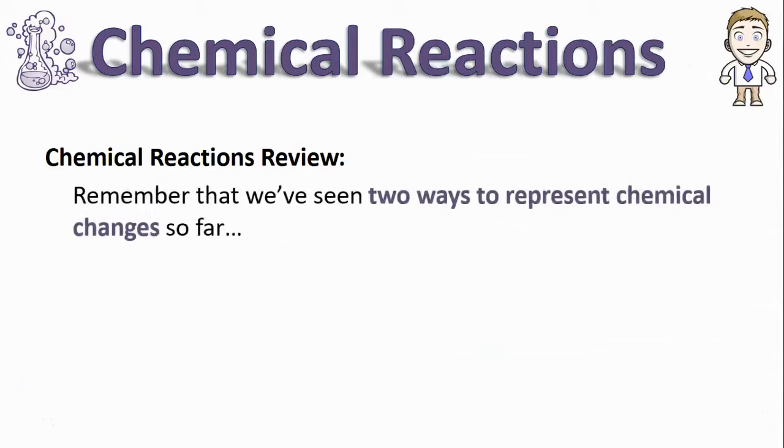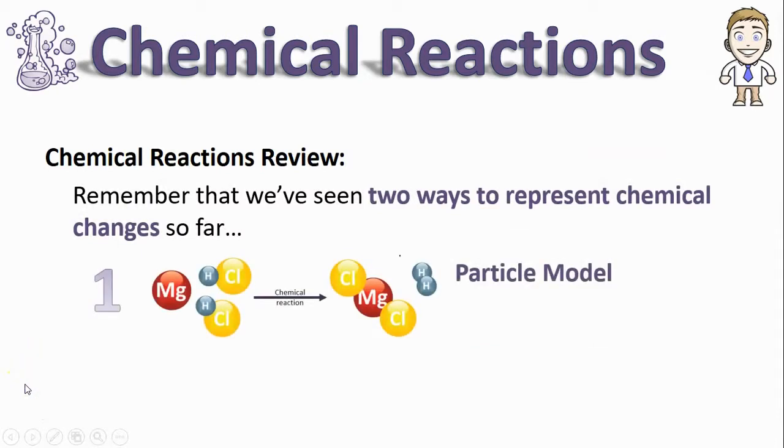Remember from some previous videos that we've seen two ways to represent chemical changes so far. One of them, called a particle model, shows every individual atom, the proper amount of each atom, and how they're attached before and after. This is really accurate but takes a long time.